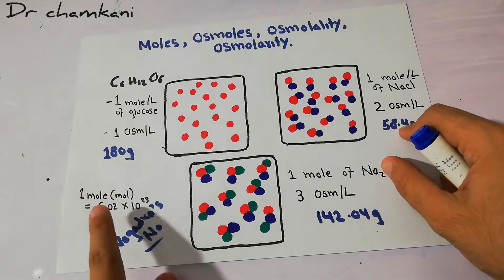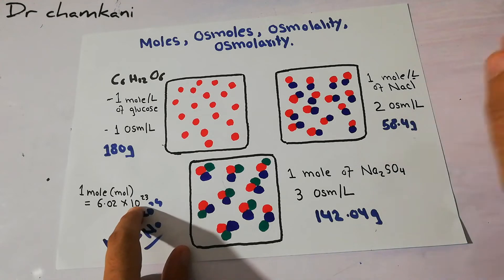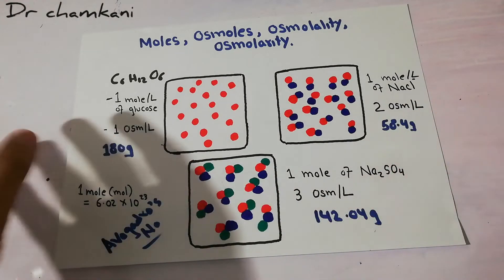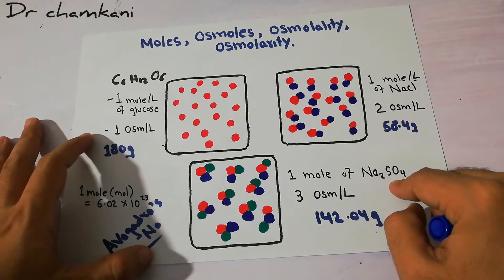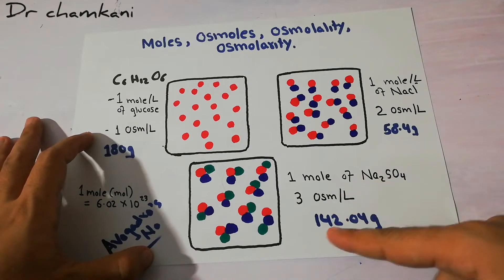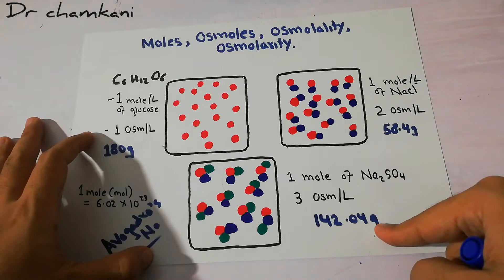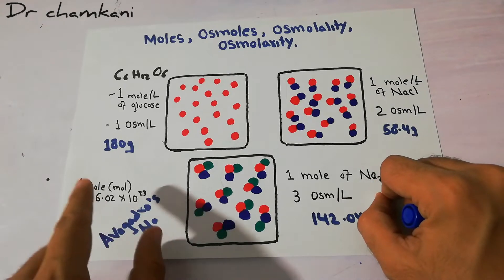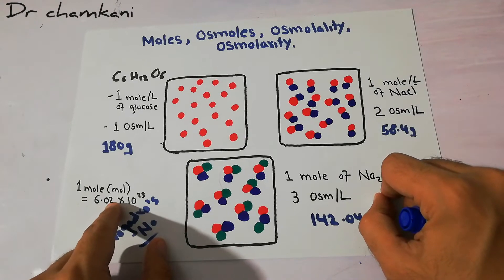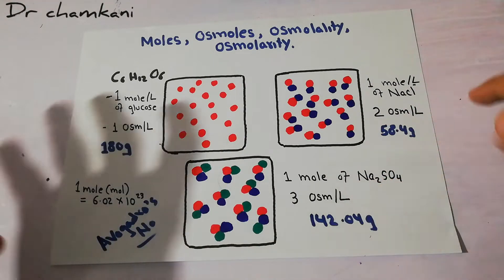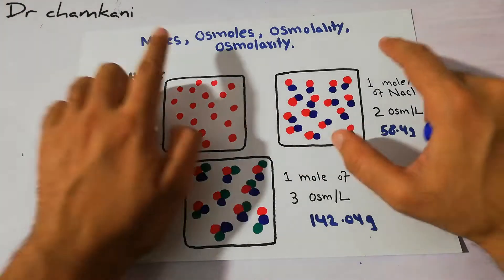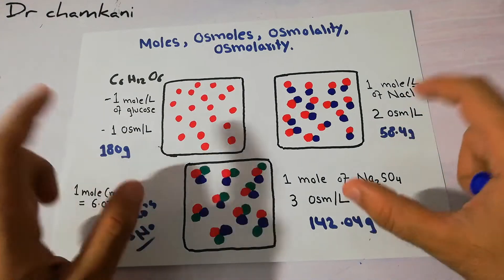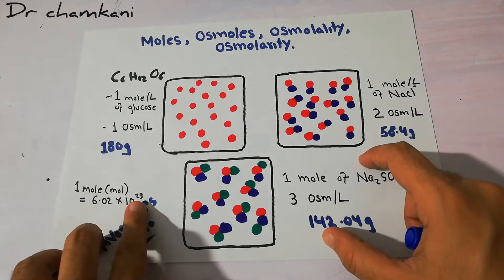180 grams of glucose contains 6.02 × 10²³ molecules. 58.4 grams of sodium chloride also contains Avogadro's number of particles. Similarly, one mole of sodium sulfate is 142.04 grams, and this 142.04 grams of sodium sulfate also contains 6.02 × 10²³ particles — Avogadro's number. So one mole of any substance shows how much weight of that compound will contain this many particles.